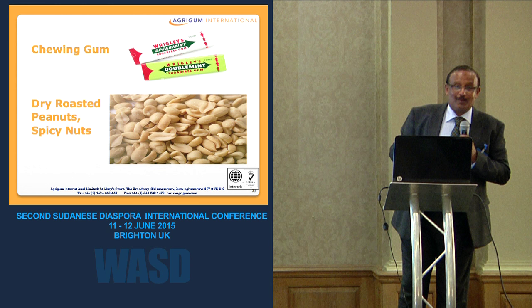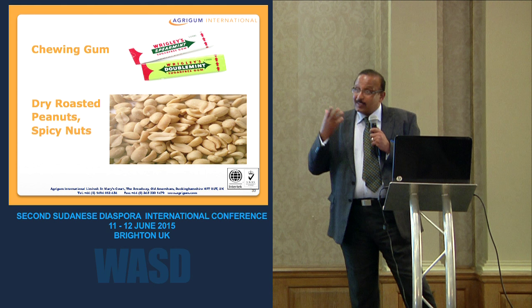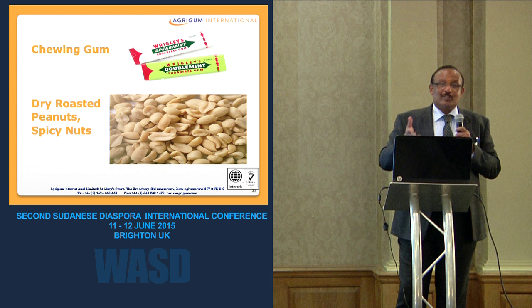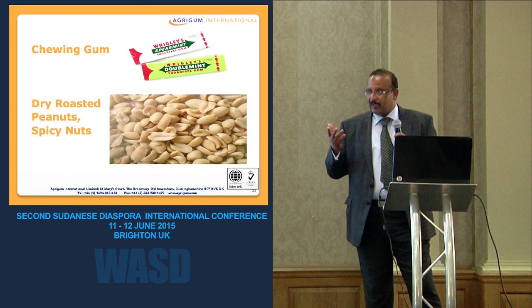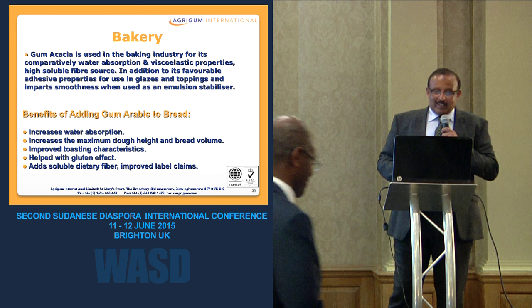For dry roasted peanuts — products you find in shops like KP Nuts — gum Arabic is used as an adhesive to bind the seasoning such as salt to the nuts. This is a commercially available product already using gum Arabic, so it is not theoretical — it is proven in practice.